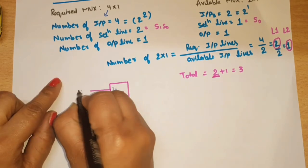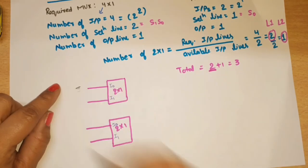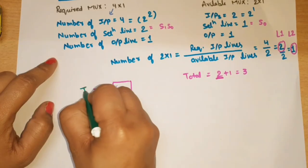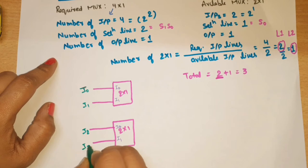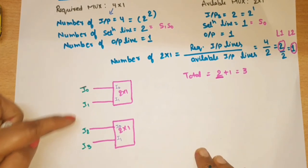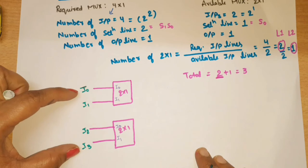In case of 4-to-1 MUX, this is I0, I1, I2, I3. These are the required inputs.